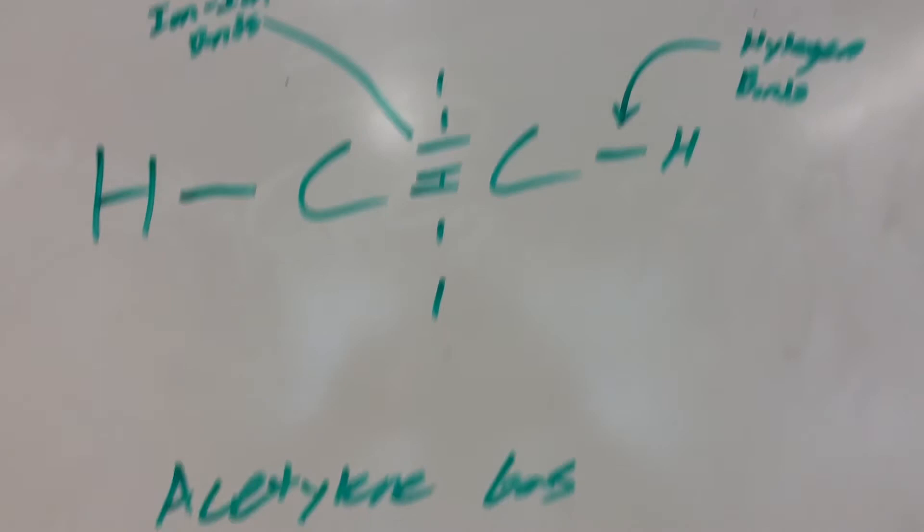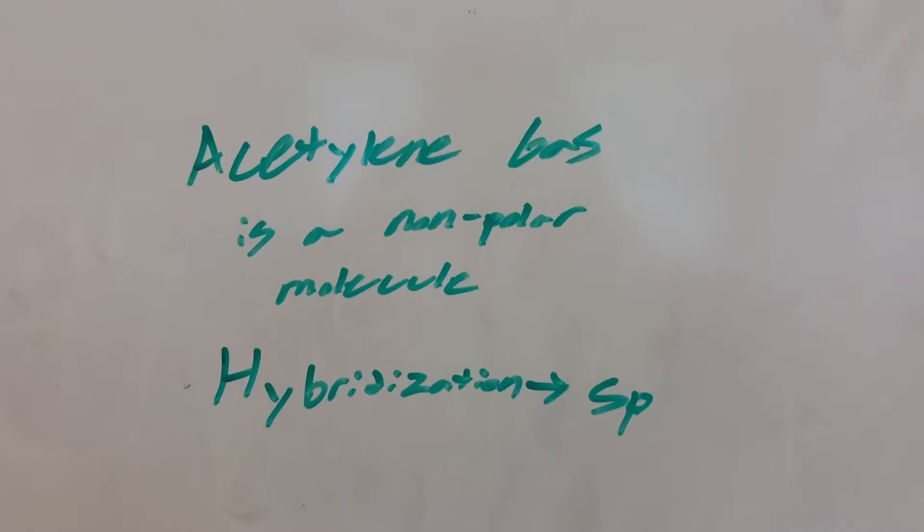Acetylene gas is nonpolar, including ion-ion bonds with hydrogen bonds. Using a triple bond to connect the carbons, acetylene gas hybridization is SP.